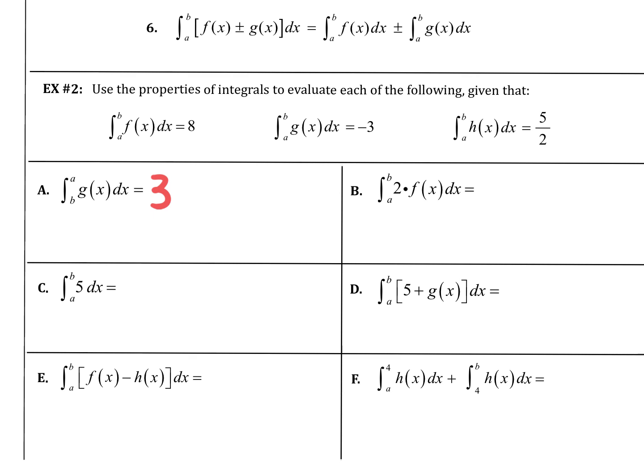Okay, so this one wants A to B of 2 times f(x). 8 times 2. So 8 times 2. Yes. That's pretty simple.